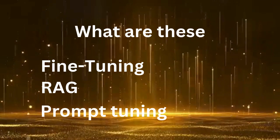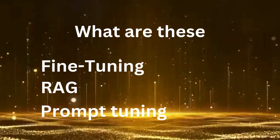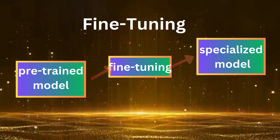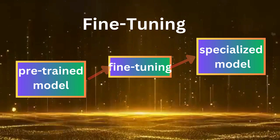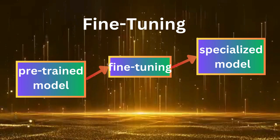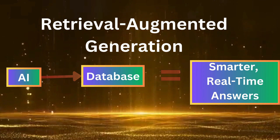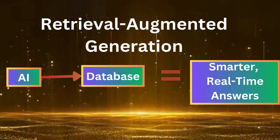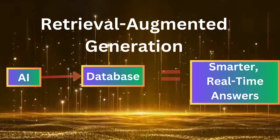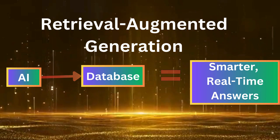Let's talk about fine-tuning, RAG, and prompt tuning at a high level. Fine-tuning involves taking a pre-trained model and training it further on your specific dataset — think of it as teaching an AI model new skills or making it an expert in a specific field. RAG combines an AI model with an external knowledge base, where the model retrieves relevant information in real time and generates a response based on that data.